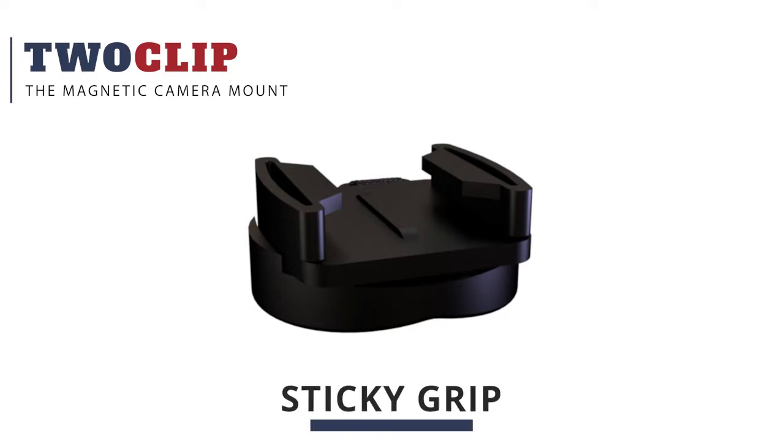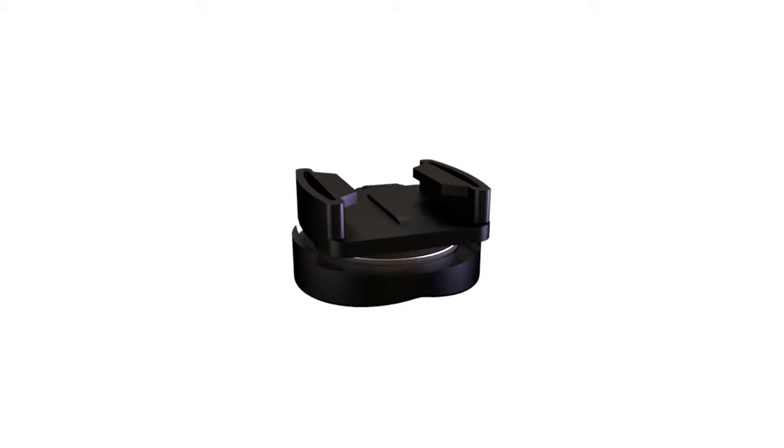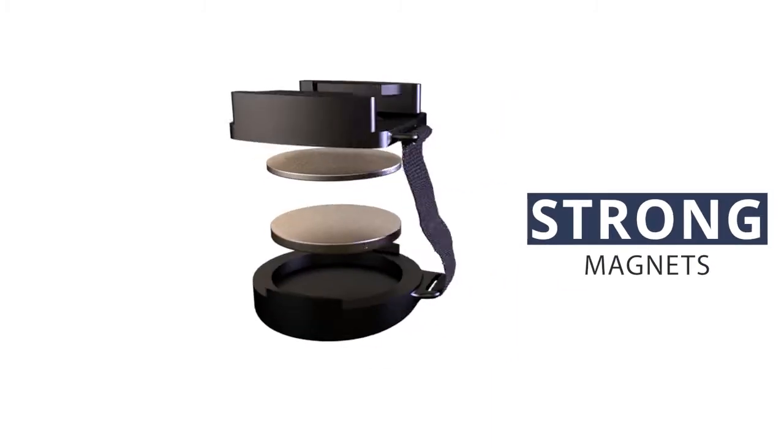2Cliff is equipped with a sticky grip that can be easily attached to your helmet, just like any regular mount. But unlike regular mounts, 2Cliff is made of two parts with a strong magnet connecting them together, so it will stay put under any normal riding conditions.